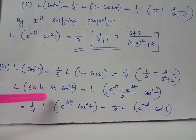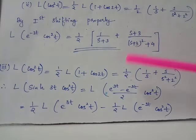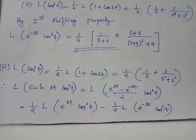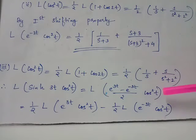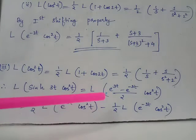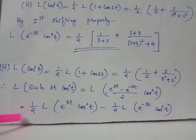Therefore, sinh(3t) can be written as (e^(3t) minus e^(-3t)) divided by 2. If we wish to apply the shifting theorem, we have e^(3t) multiplied by cos²(t), to which we have to apply the Laplace transform. The factor 1/2 can be taken outside using the linearity property.